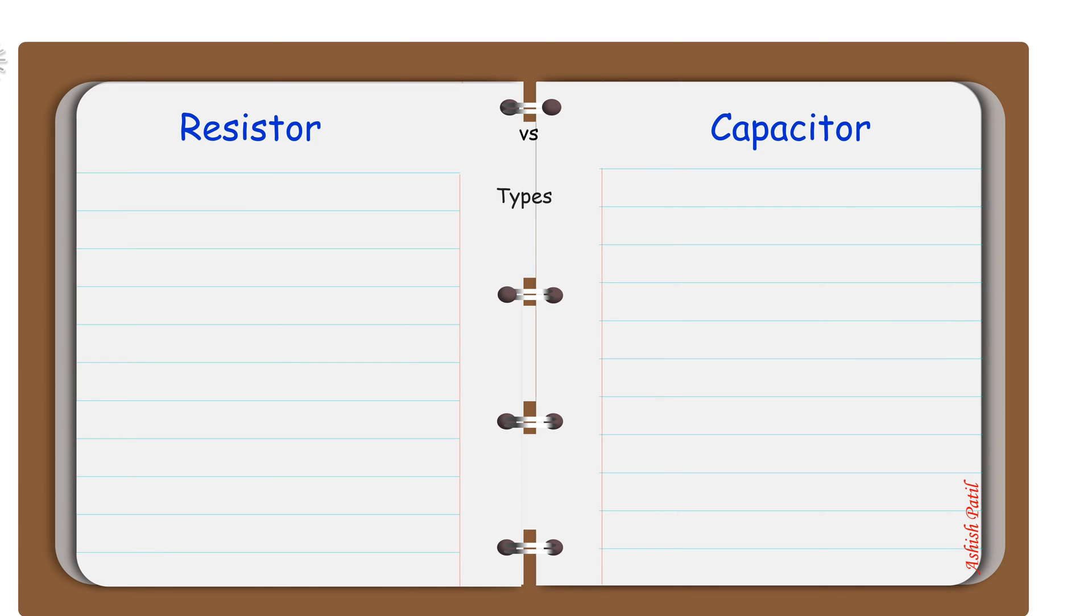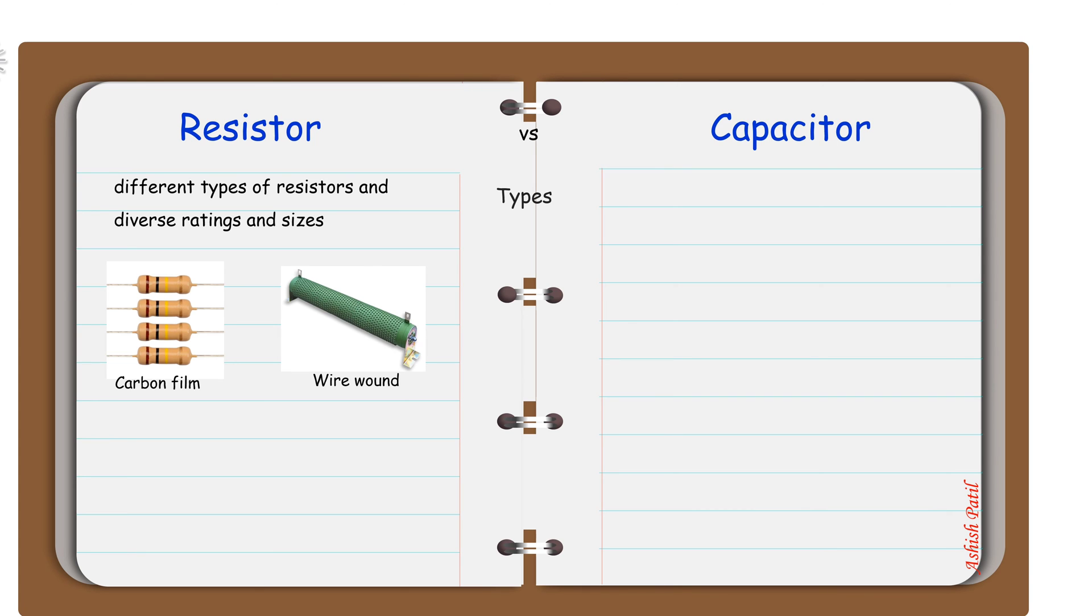Types. There are different types of resistors available in the market with different ratings and sizes. Some of these are: Carbon film resistor, Wire wound resistor, Surface mount resistor, Rotary potentiometer resistor.